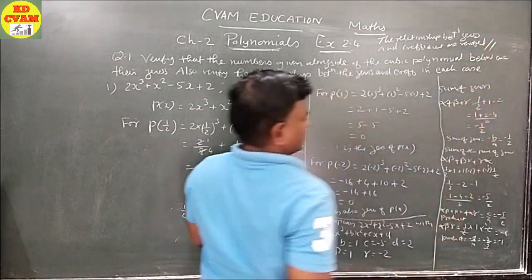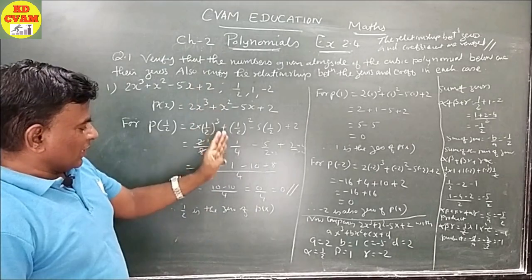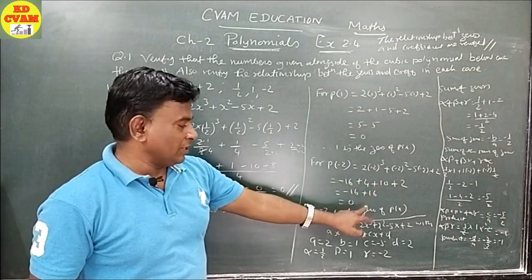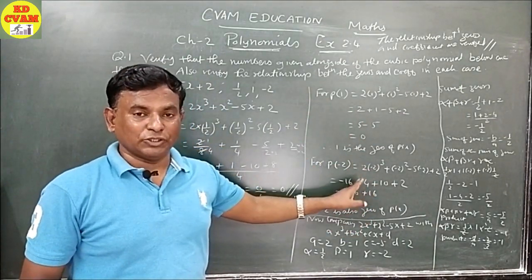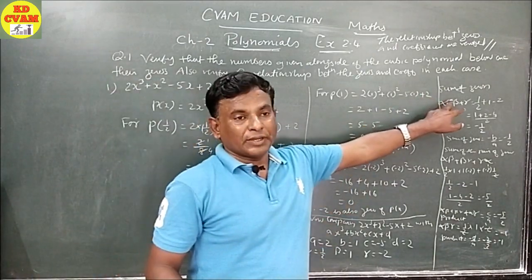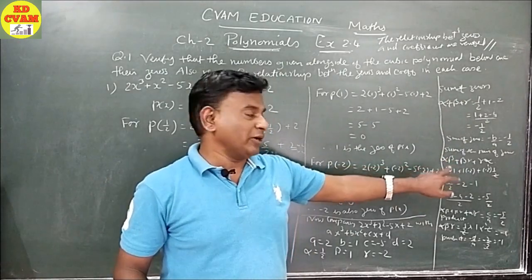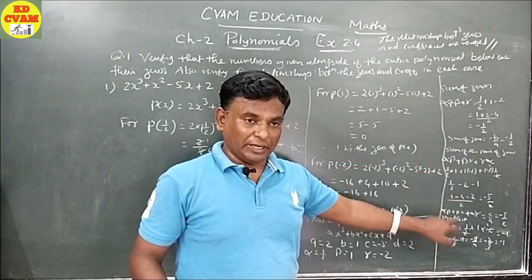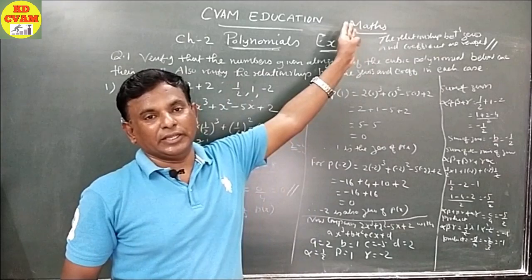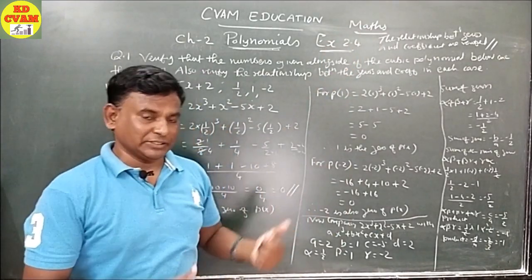This is how the sum is done. First you find the zeros, verify all three zeros, then verify the sum of zeros, sum of pairs of zeros, and the product of zeros. If all three match, it is verified. Let's go to the next sum.